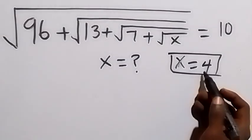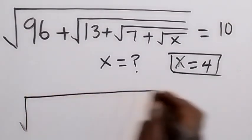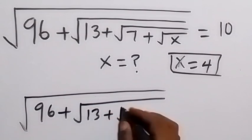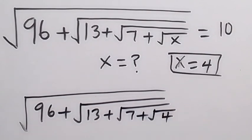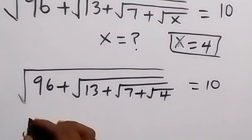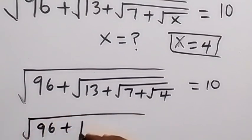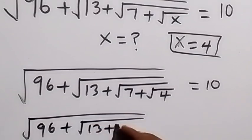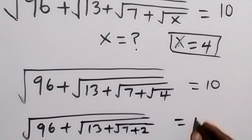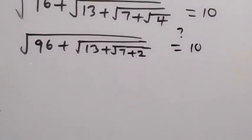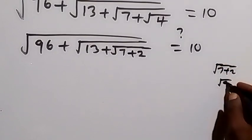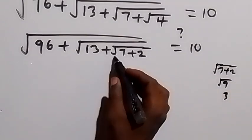From here, let's check if this value of x satisfies the equation given. We put x equals 4, so we have square root of 96 plus square root of 13 plus square root of 7 plus square root of 4. Square root of 4 is 2, so this becomes square root of 96 plus square root of 13 plus square root of 7 plus 2. Now 7 plus 2 is the same as root 9, and root 9 is 3.